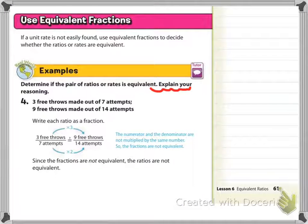We're talking about using equivalent fractions as another method to determine if you have equivalent ratios. If a unit rate is not easily found, then you can decide if the ratios or rates are equivalent by thinking about them like fractions.